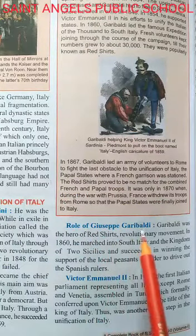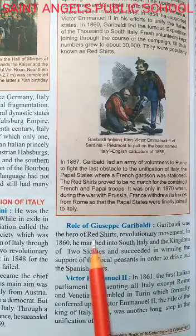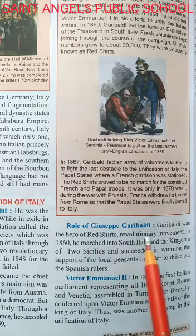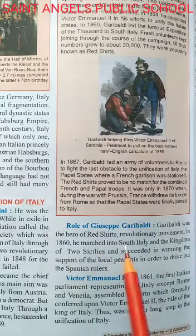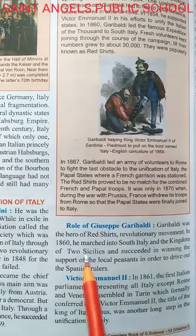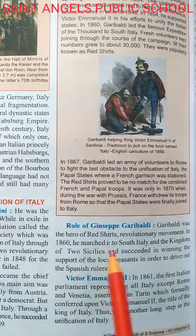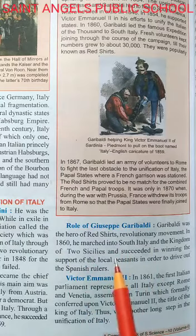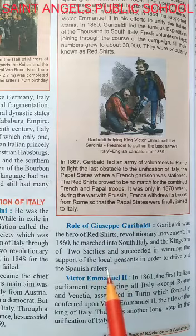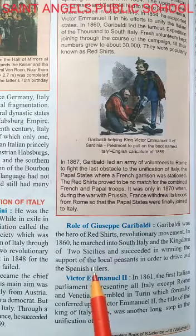Role of Giuseppe Garibaldi. Garibaldi was the hero of the Red Shirts. Garibaldi Red Shirts ka hero tha, nayak tha — a revolutionary movement. In 1860 he marched into south Italy and the Kingdom of Two Sicilies, and succeeded in winning the support of the local peasants in order to drive out the Spanish rule. 1860 mein Garibaldi south Italy aur Kingdom of Two Sicilies mein pahuncha, aur yahan ke jo local peasants the unka saath pakar, yahan per Spain ne jo kabja kiya hua tha, usse is ko mukt karaya.